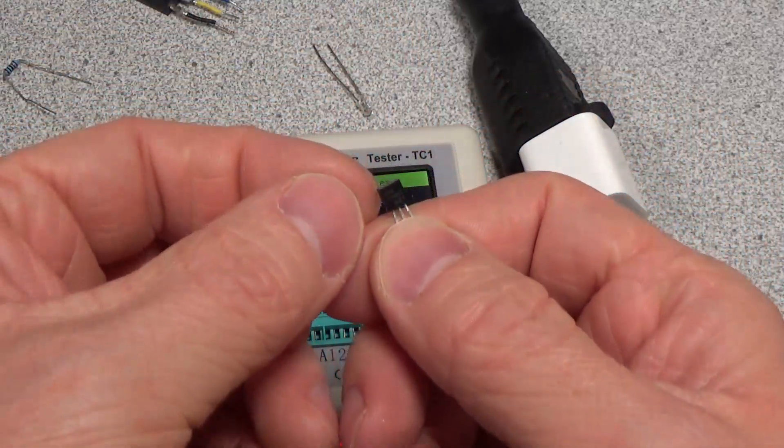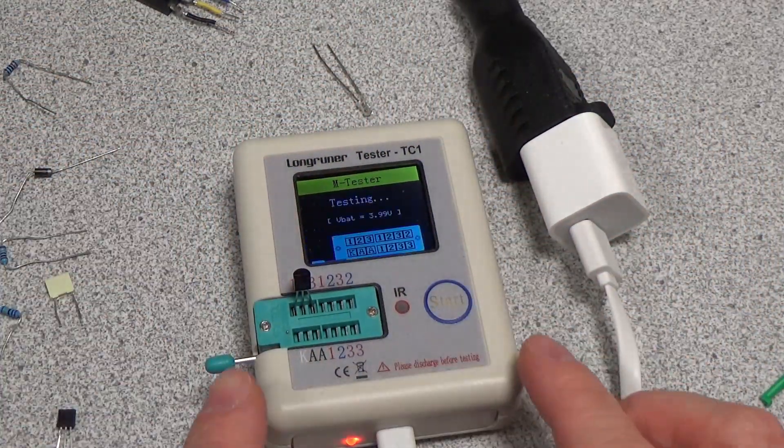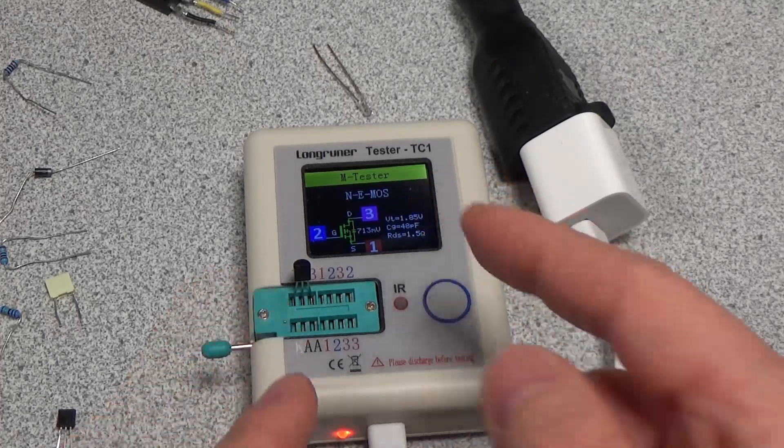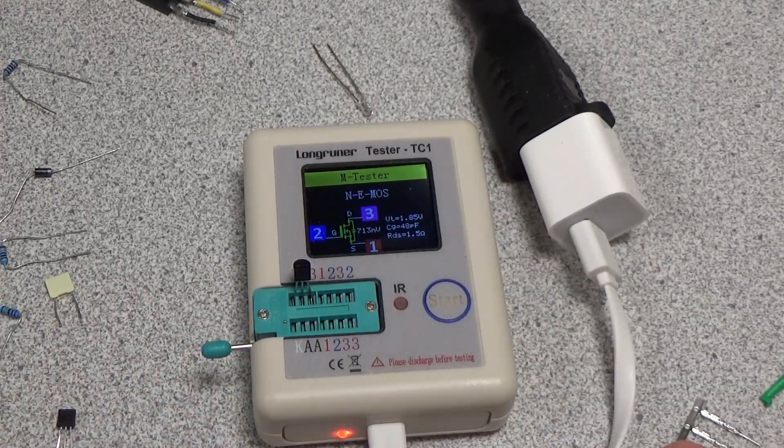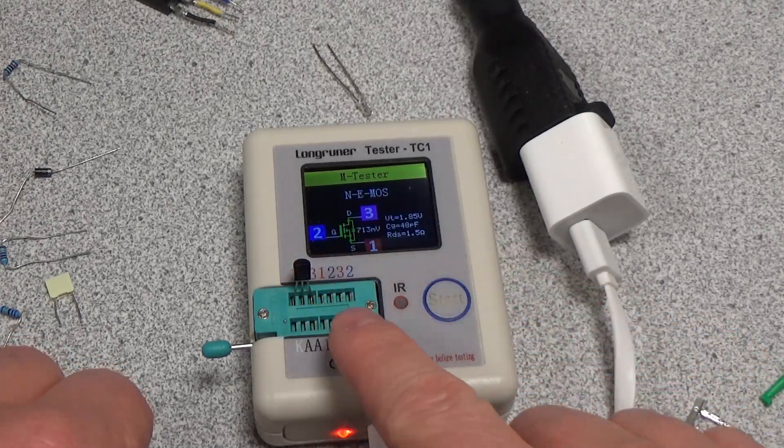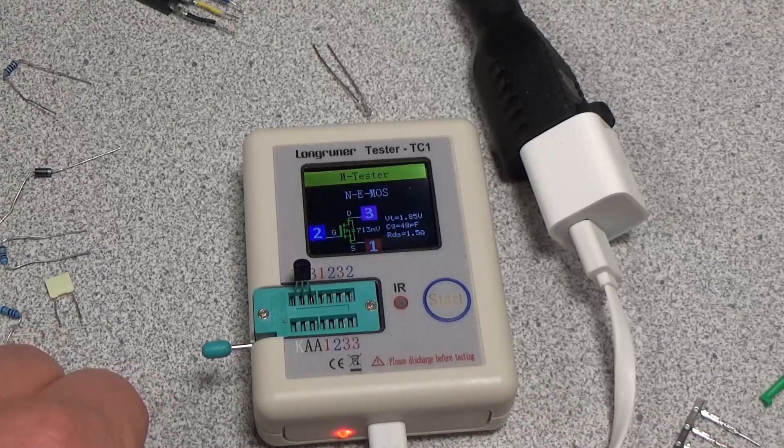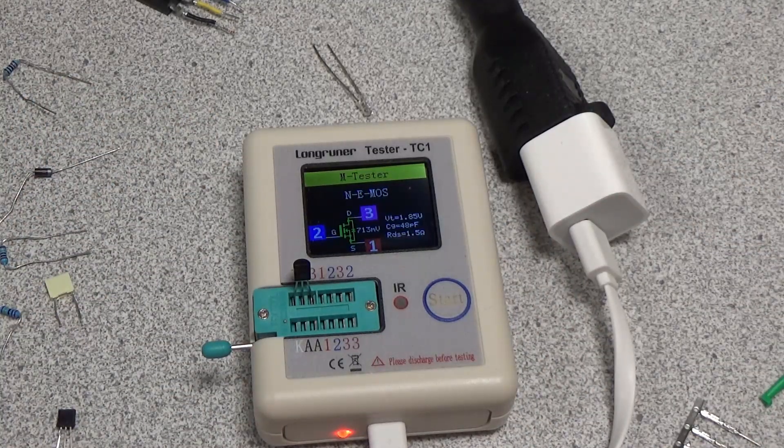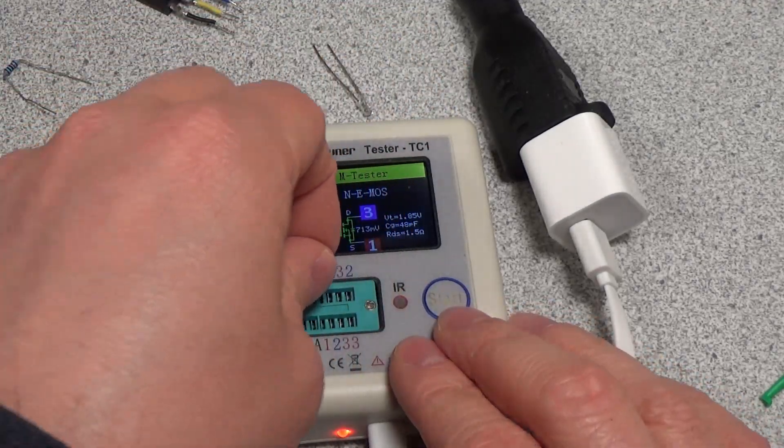What's this guy? This is a MOSFET. Yep, so this one is coming up correctly, enhancement mode MOSFET. So this is a 2N7000 and it's just a regular N-channel MOSFET, N-E MOSFET.